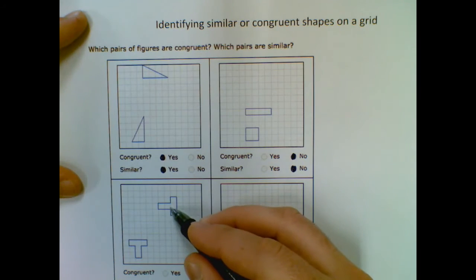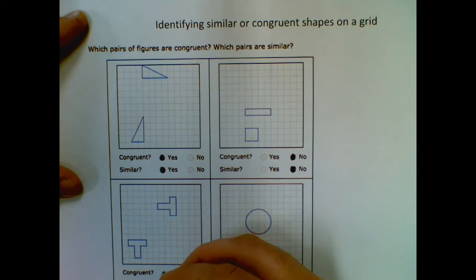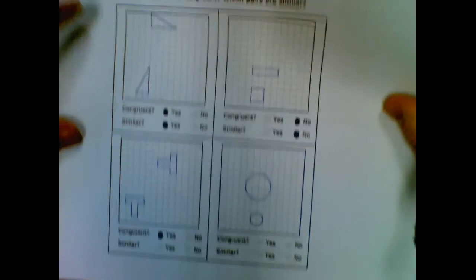All right, these are actually congruent, they're both T's that are three tall and three wide up in the top there, so they're congruent, which makes them automatically similar.